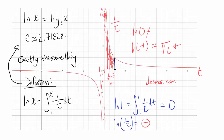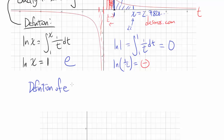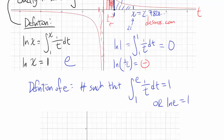Let's ask: what value of x gives natural log of x equal to 1? Starting at 1 and going to some point, the area under the curve equals 1 at a specific value. That value turns out to be approximately 2.718281828459045235360, and we give it the specific name e. So the definition of e is: e is the number such that the integral from 1 to e of 1 over t, dt equals 1, or equivalently, natural log of e equals 1.